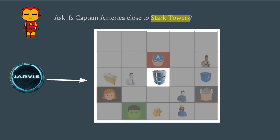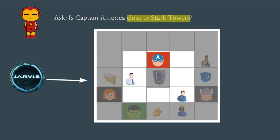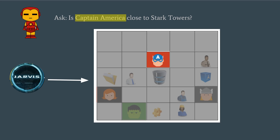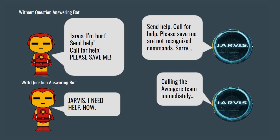First, Jarvis locates Stark Tower. Second, it looks for places in the vicinity of Stark Tower. Finally, it locates Captain America. Now, to answer any generic question, Jarvis needs to automatically decide its structure, regardless of text, visual, or any other kind of input.